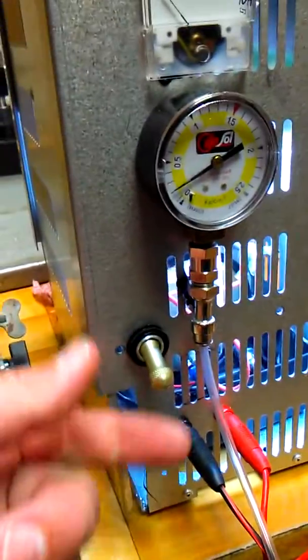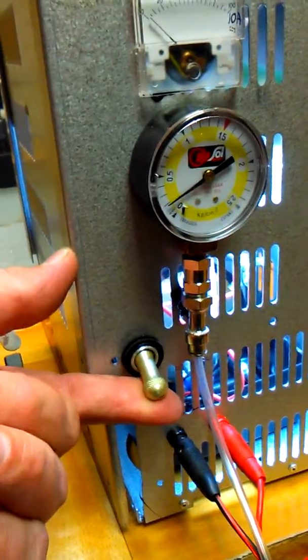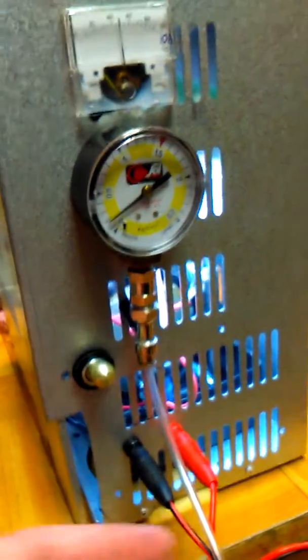This is the main switch to switch on the electrolyzer. Here we have 12 volts from a car battery charger.